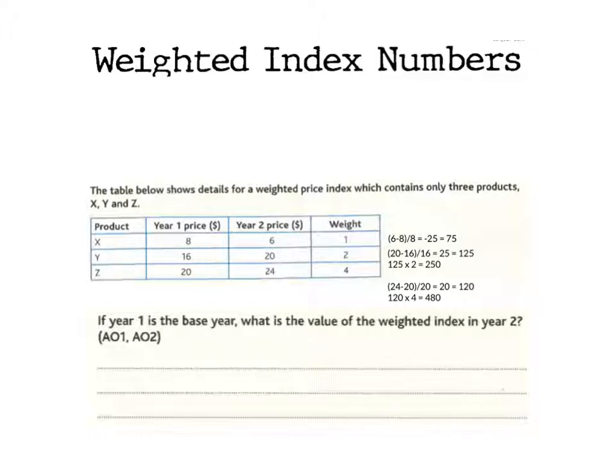Then what we have to do is add the 75, the 250, and the 480, and once we've got that total then we can divide it by all the weights, which is 4 plus 2 plus 1. Again, have a go at doing that now.